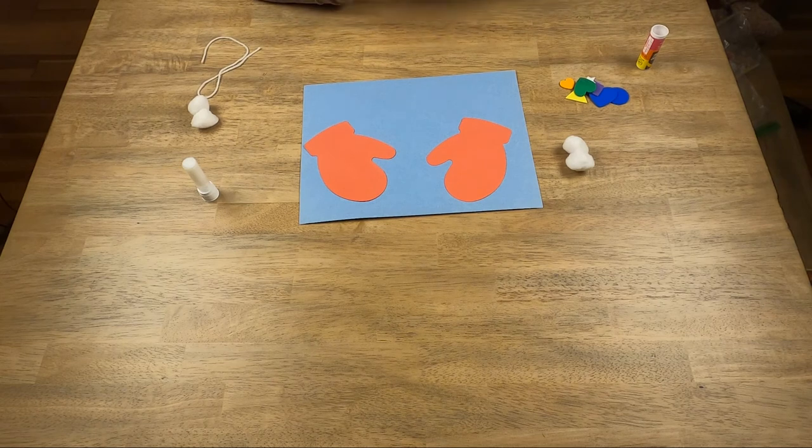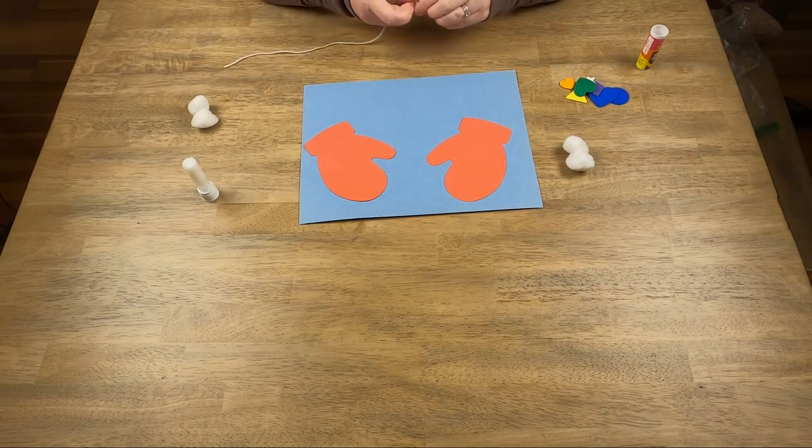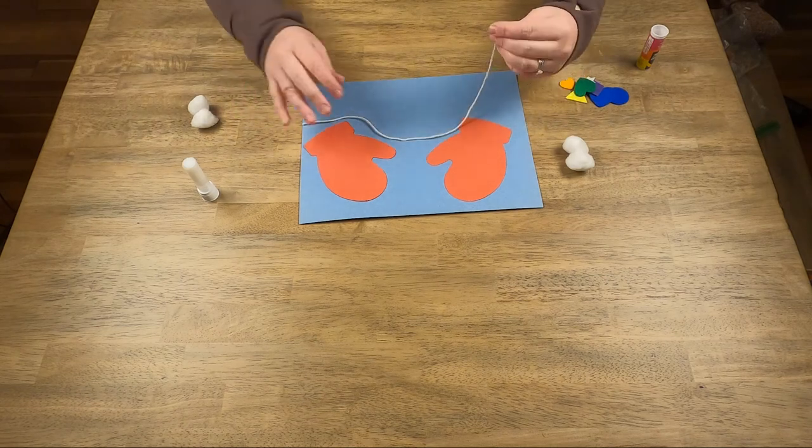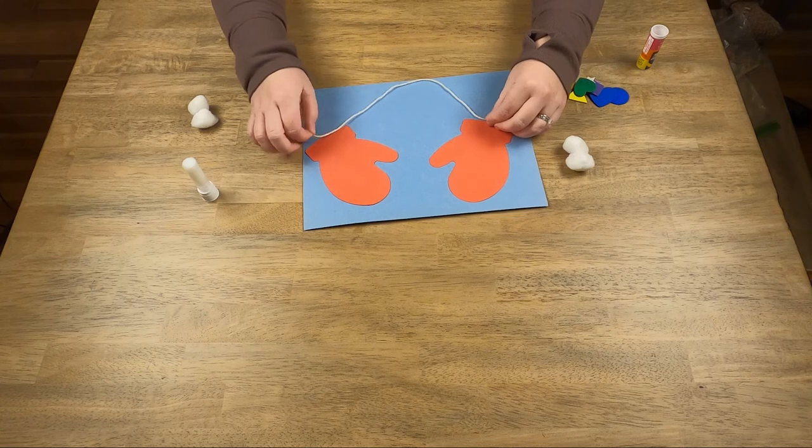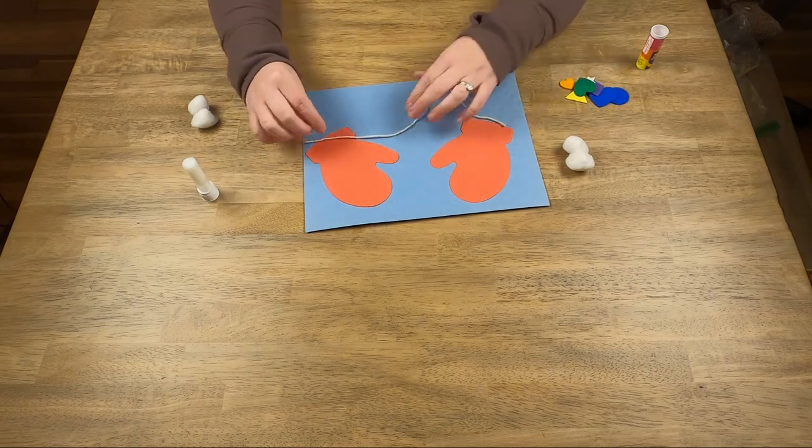And now we get to decorate them. The first thing we're gonna do to decorate is, I always lose one of my mittens, so we're gonna try to make it look like they're tied together so they're easier to find.